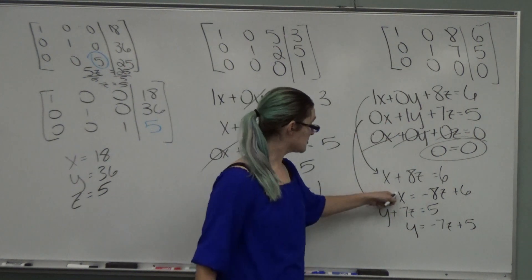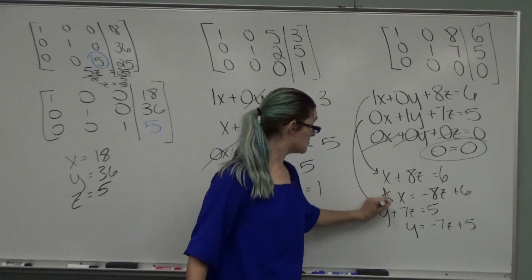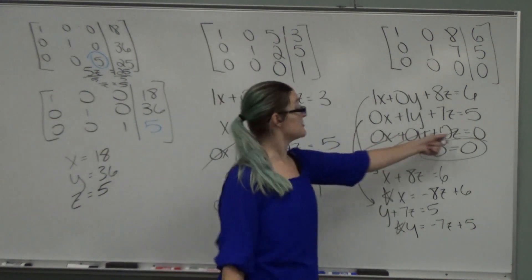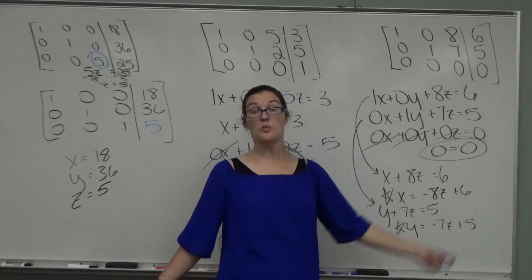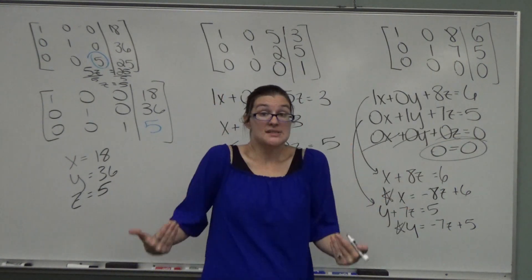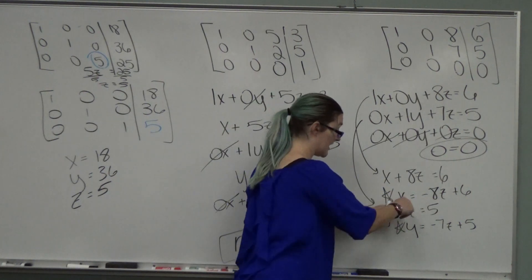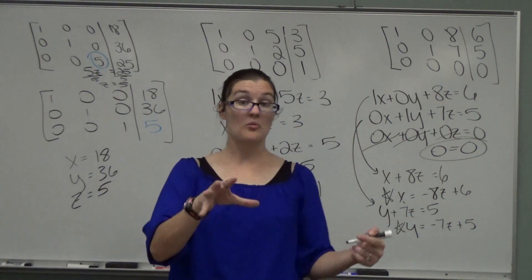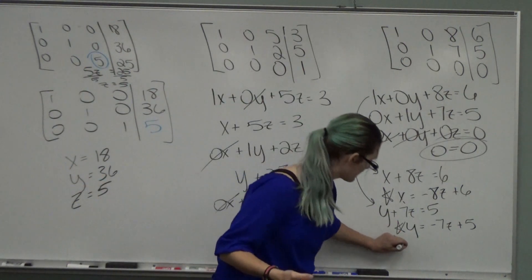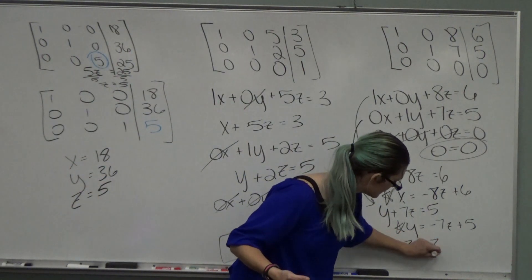So we have an equation for x and an equation for y. Those are important. The only thing we're missing now is the equation for z. And what you're going to say is, if I knew z, I could find out x and I could find out y. So my z is going to be whatever you tell me my z is going to be. z equals z.